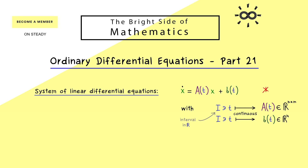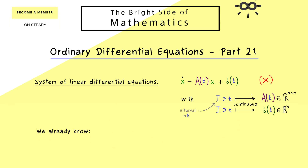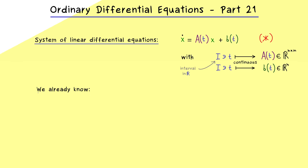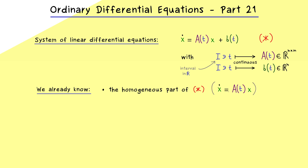Let's call it star for the sake of this video. Since we have already discussed a lot about this system star, we can list the things we know. For example, star has a homogeneous part — this simply means we can consider the system where we ignore the part b(t), so we only have the matrix-vector multiplication on the right-hand side. Please recall from part 19 that the homogeneous system has an n-dimensional solution space we call S₀. At first glance it does not immediately help us find the solution set for the original system.